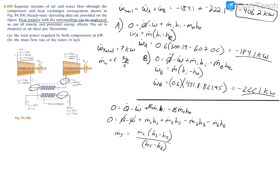Since m_dot_5 equals m_dot_6 we replace m_dot_6 with m_dot_5, and since m_dot_2 equals m_dot_3 we replace m_dot_3 with m_dot_2 and solve. Plugging in known values: m_dot_2 = 0.6 kg/s, h3 = 451.8 kJ/kg, and h2 = 607.02 kJ/kg. We still need h5 and h6 from the property tables.